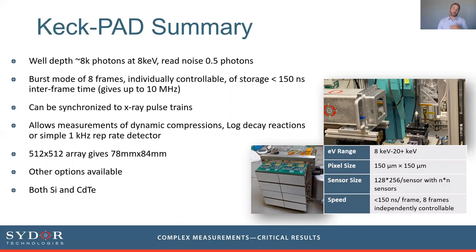The device enables a burst mode up to 10 megahertz framing rates, and we can synchronize those frames to individual x-ray pulses in the ring. It also enables continuous framing at one kilohertz, and because each capacitor can be individually triggered, we can set variable interframe delays within bursts of eight frames, enabling things like logarithmic decay timing. The array is approximately 80 mm² in a 512 by 512 pixel configuration, and both silicon and cadmium telluride versions are now available to order.